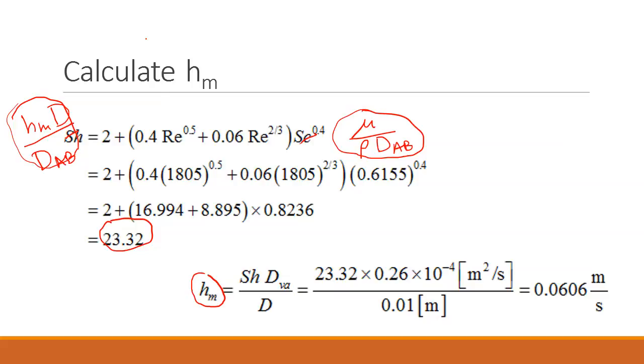So from there, I can calculate HM because, just plugging in for DAB. AB is vapor and B is air. So DVA, diffusivity of vapor in air, that is from table, and this is the diameter. So that gives me the HM value. This is my mass transfer coefficient.